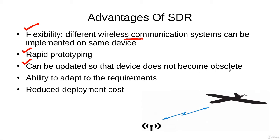The third advantage is that the hardware does not become obsolete, because new wireless communication systems can still be implemented on the same hardware by just changing the software. The fourth advantage is that different wireless communication systems have different requirements in terms of range, transmit power, and bit error rate.